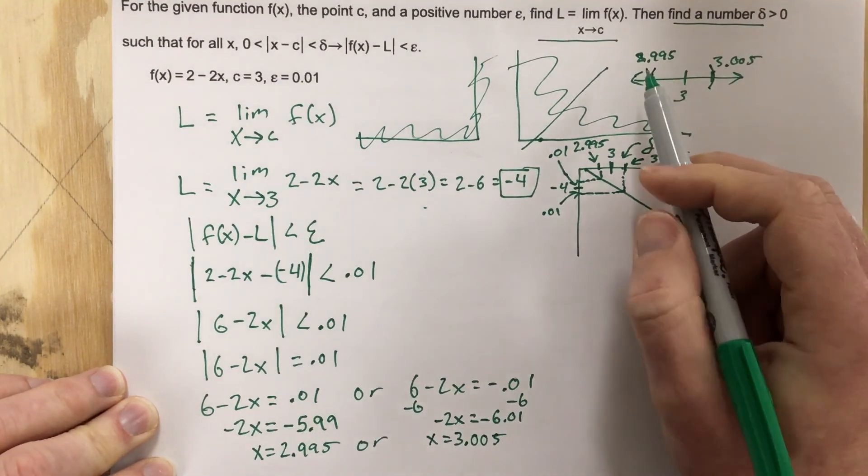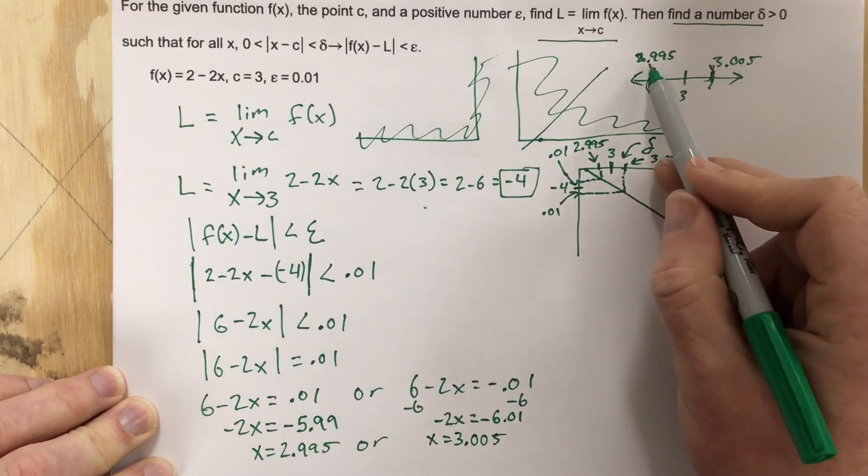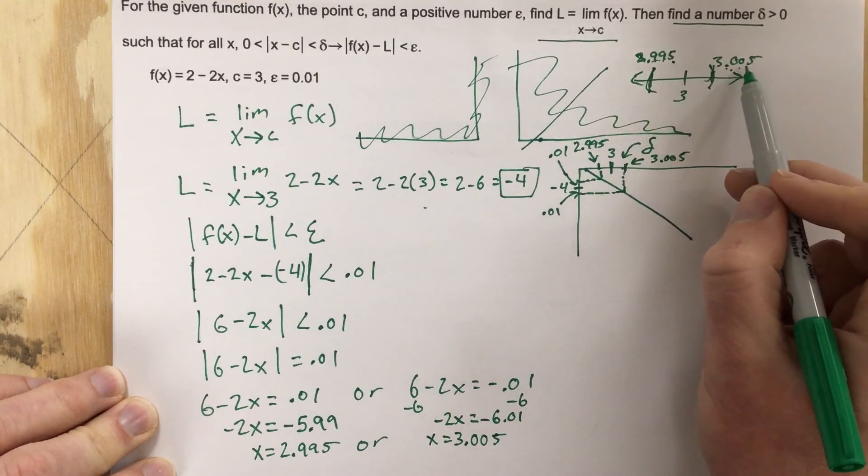So our, and they don't ask us for the interval here, but our interval for x values would run from 2.995 to 3.005.